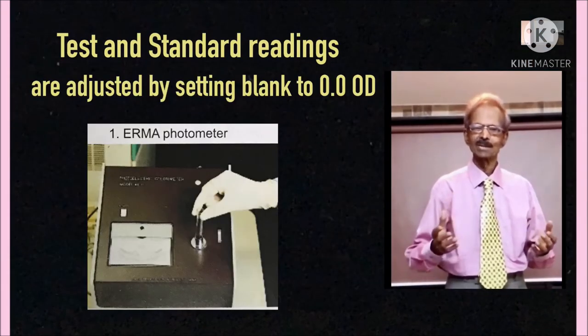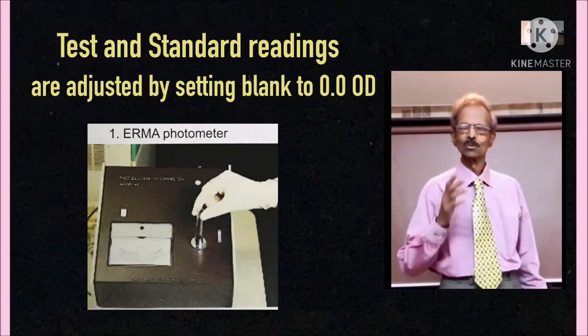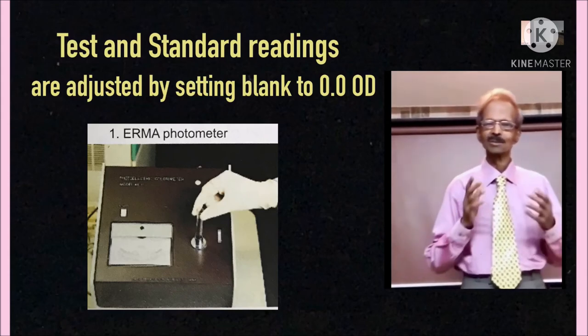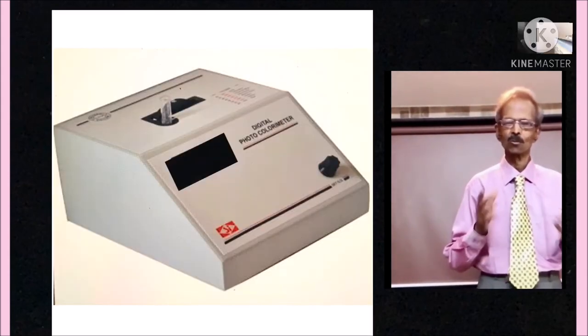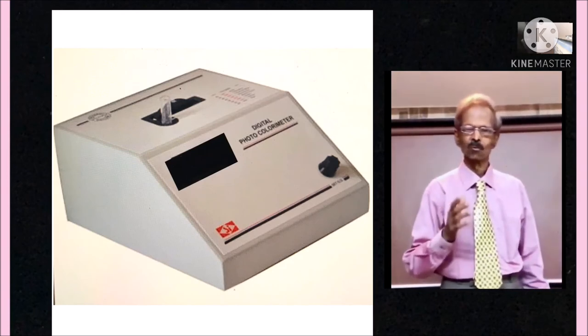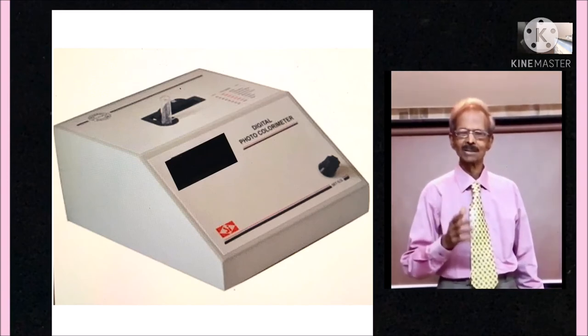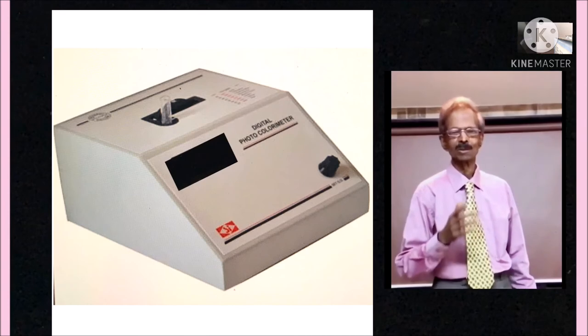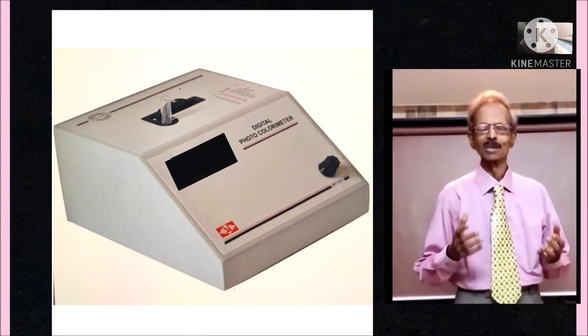In this experiment, the readings of test and standard are adjusted by subtracting blank reading. Now I will show you how a digital photometer is operated.